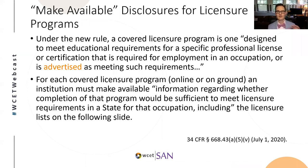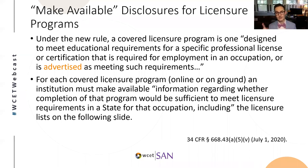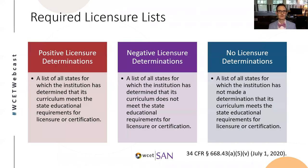One of the first things you should do is go through your programs and determine which ones satisfy the covered licensure program definition — then decide how to make your required disclosures. The department has actually simplified the make available disclosures compared to the 2016 rule. For each covered licensure program, you have to disclose whether completion of that program would be sufficient to meet the licensure requirements in each state for that occupation. Specifically, the department wants you to create three lists: a list of positive licensure determinations, a list of negative licensure determinations, and a list of states for which no determination has been made.